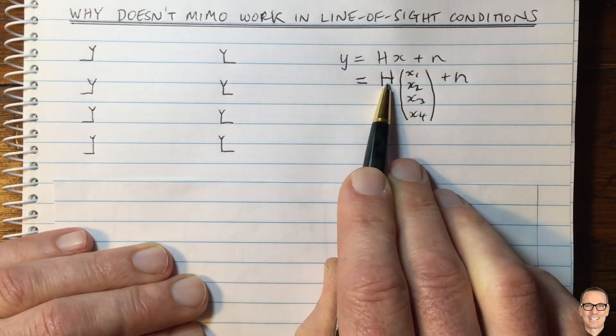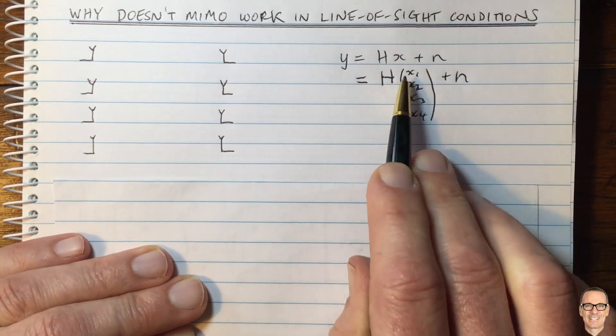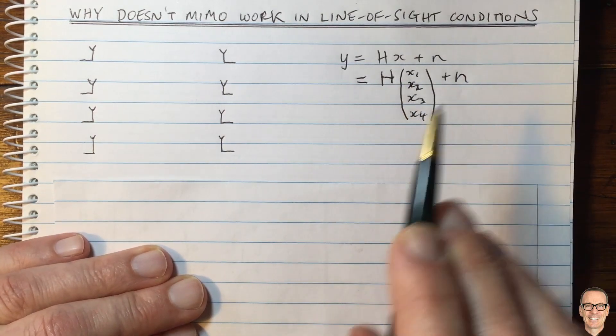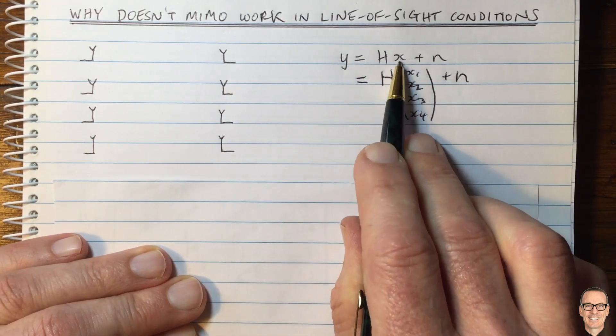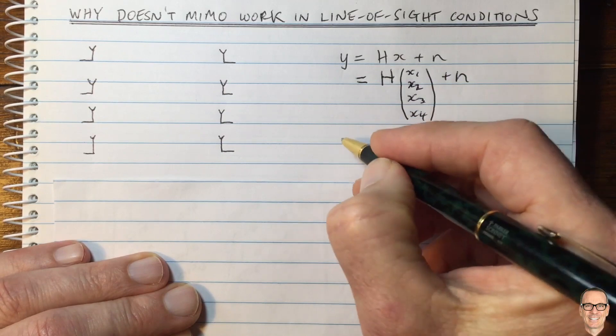H is a matrix, a 4x4 matrix, and N is a 4x1 vector. If you wanted to measure Y and get an estimate of the transmitted data,